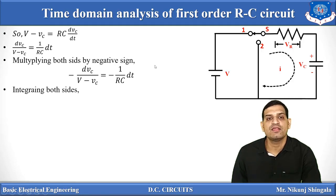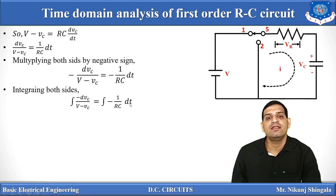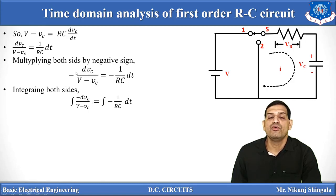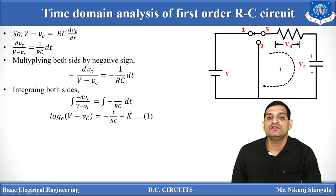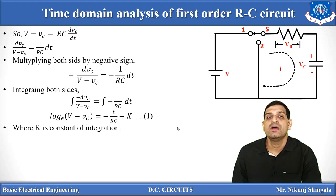Now taking integration on both sides — left hand side with respect to VC, right hand side with respect to time t. Integrating 1/(V minus VC) with respect to VC gives us ln(V minus VC). So we get: ln(V minus VC) equals minus t divided by RC plus k, where k is the constant of integration. We must find the value of k using the initial condition.